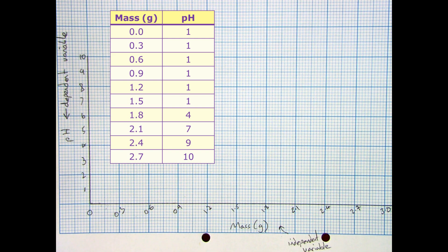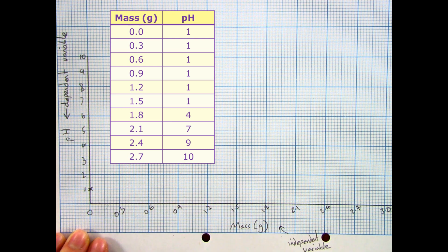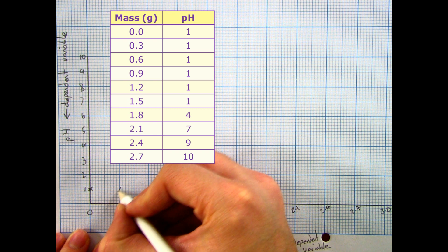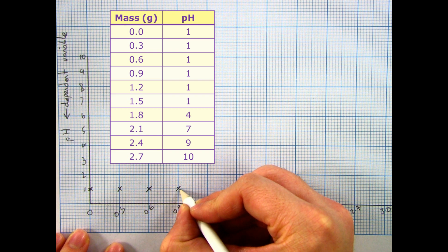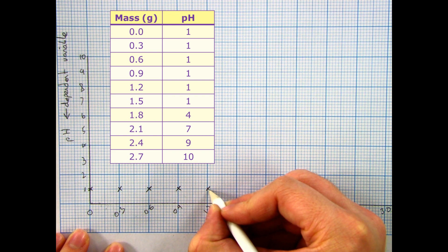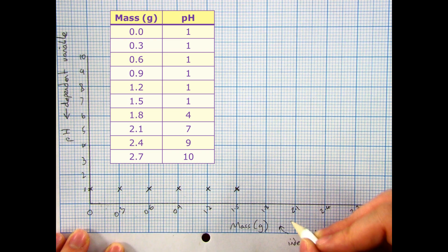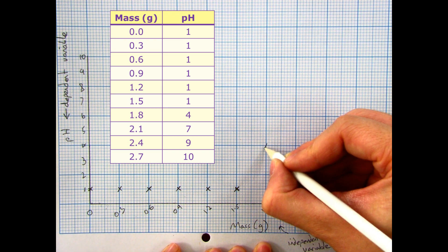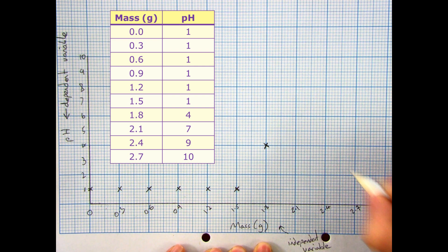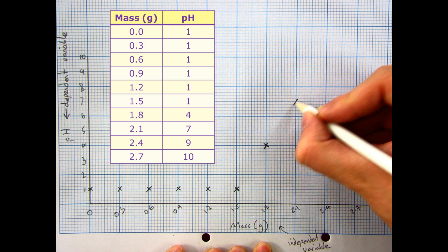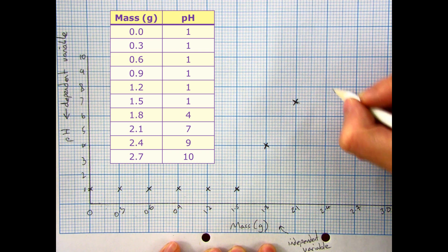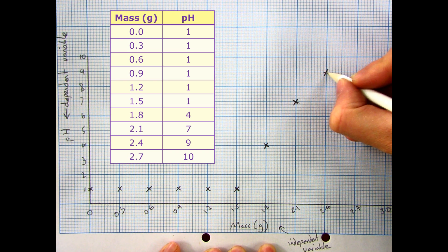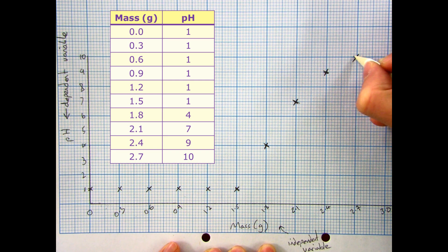Your next step is to plot your data. When I had a mass of 0 grams, I had a pH of 1, so I can put a cross in there. At 0.3 grams I also had a pH of 1, and I do the same with 0.6, 0.9, 1.2, and 1.5. When I got to 1.8, it goes up to 4. At 2.1 it went up to 7, where it was neutral. At 2.4 it went up to 9, and finally 2.7 went up to 10.